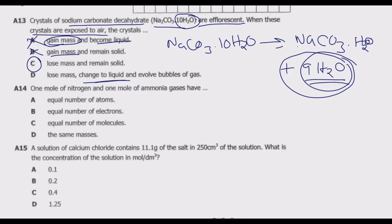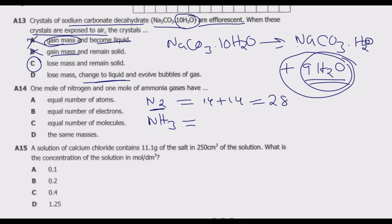Question A14: one mole of nitrogen (N2) and one mole of ammonia (NH3) — what do they have in common? Nitrogen N2 contains two nitrogen atoms; its relative molecular mass is 14 + 14 = 28. Ammonia NH3 contains one nitrogen and three hydrogen atoms; its relative molecular mass is 14 + 3 = 17. The masses are different.